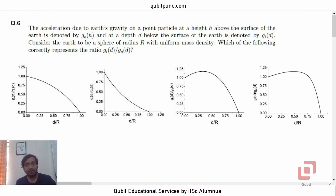Let us read the problem first. The acceleration due to Earth's gravity on a point particle at a height h above the surface of the Earth is denoted by G0(h) and at a depth d below the surface of the Earth is denoted by G_d. Consider the Earth to be a sphere of radius R with uniform mass density. Which of the following correctly represents the ratio G_d divided by G0(d)?